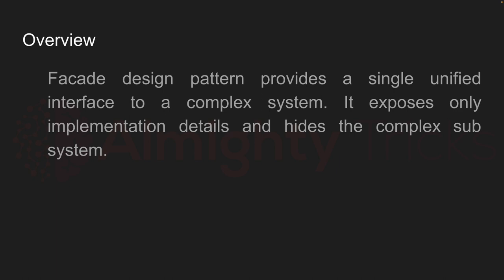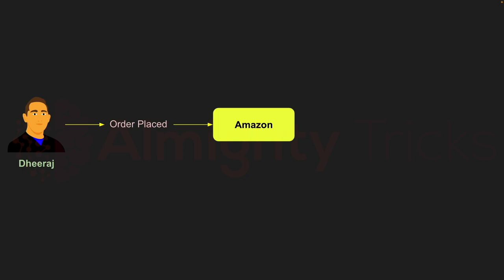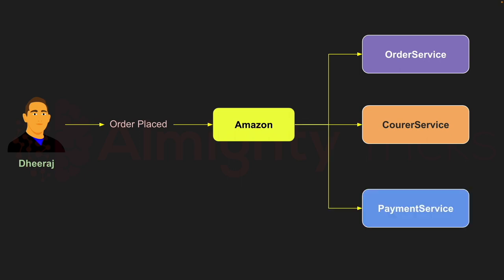Let's understand this with an example. A person named Dhiraj placed an order on Amazon. Immediately, Amazon internally calls its complex systems like order service, courier service, and payment service. Dhiraj doesn't know how Amazon works internally — Amazon is hiding its complex implementation from the user. Here, order service, courier service, and payment service are subsystems of Amazon. We can say Amazon is the boundary to a complex system, and here Amazon acts as the facade.